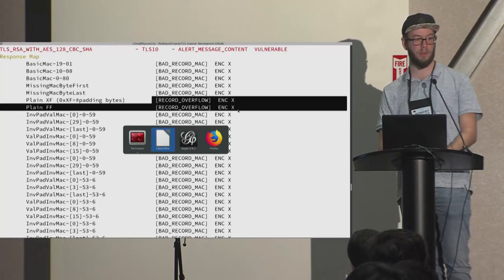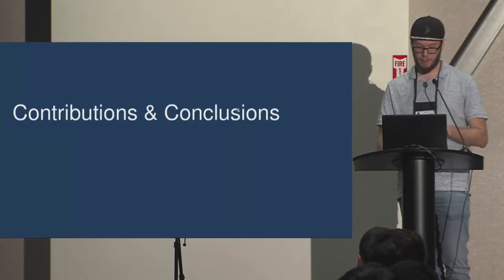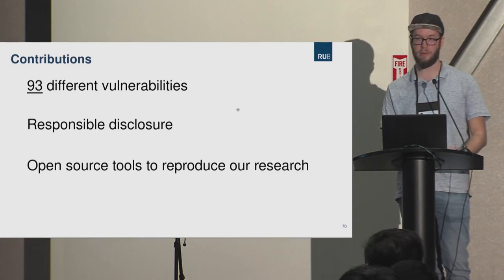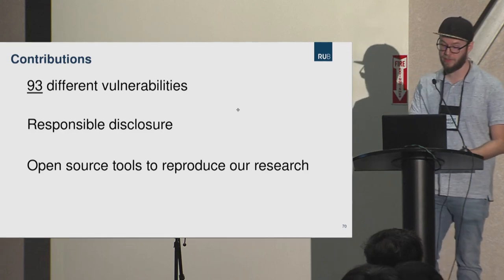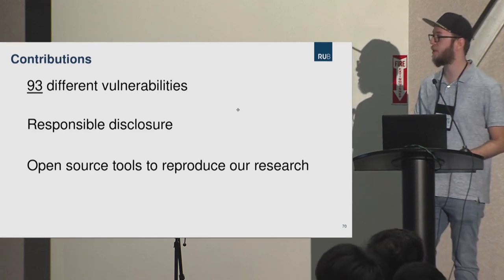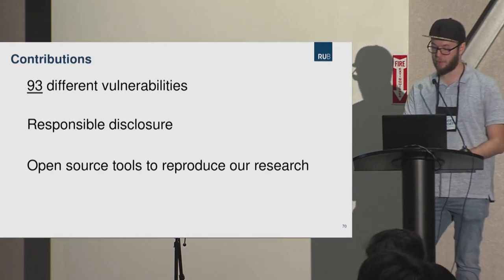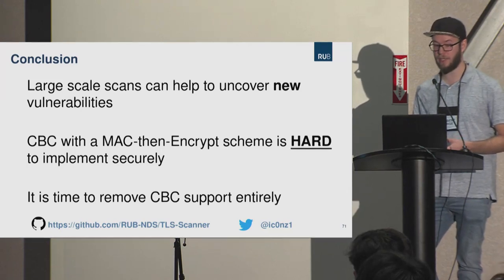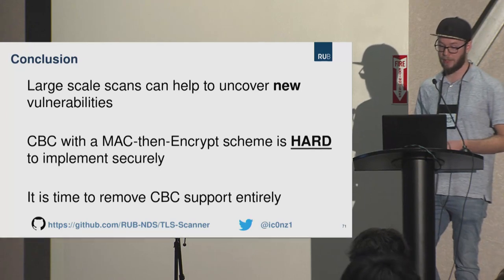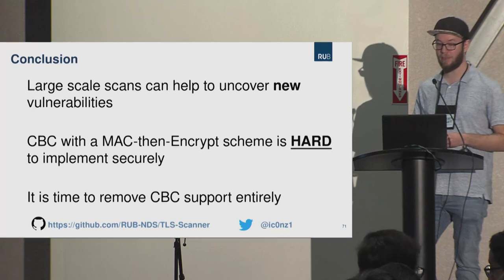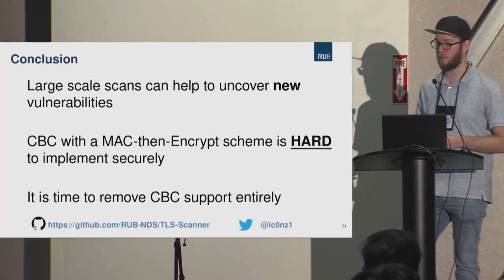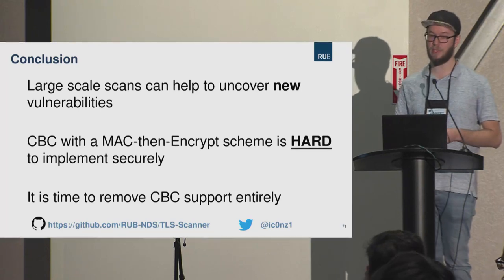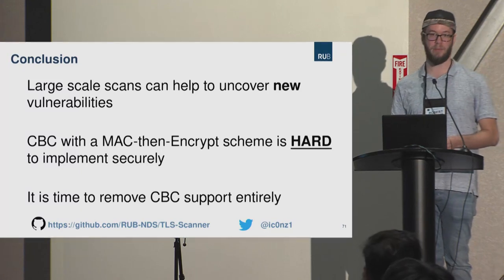In conclusion, we found 93 different vulnerabilities in the Alexa top 1 million, responsibly disclosed our findings to affected vendors and websites, and released open-source tools to reproduce our research. Large-scale scans can uncover new vulnerabilities that don't show up in lab settings because actual servers sometimes use software in unintended ways. CBC with MAC-then-encrypt is really hard to implement correctly — it must be completely side-channel-free and constant-time. Perhaps it's time for the community to remove CBC support entirely from both client and server software.